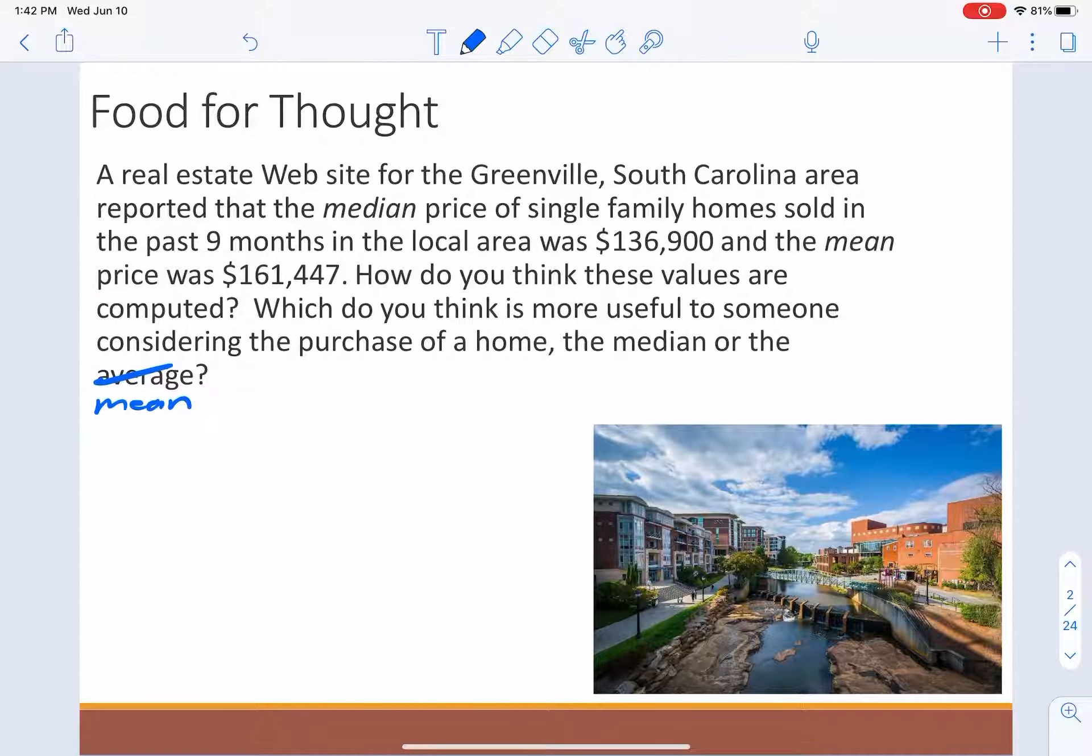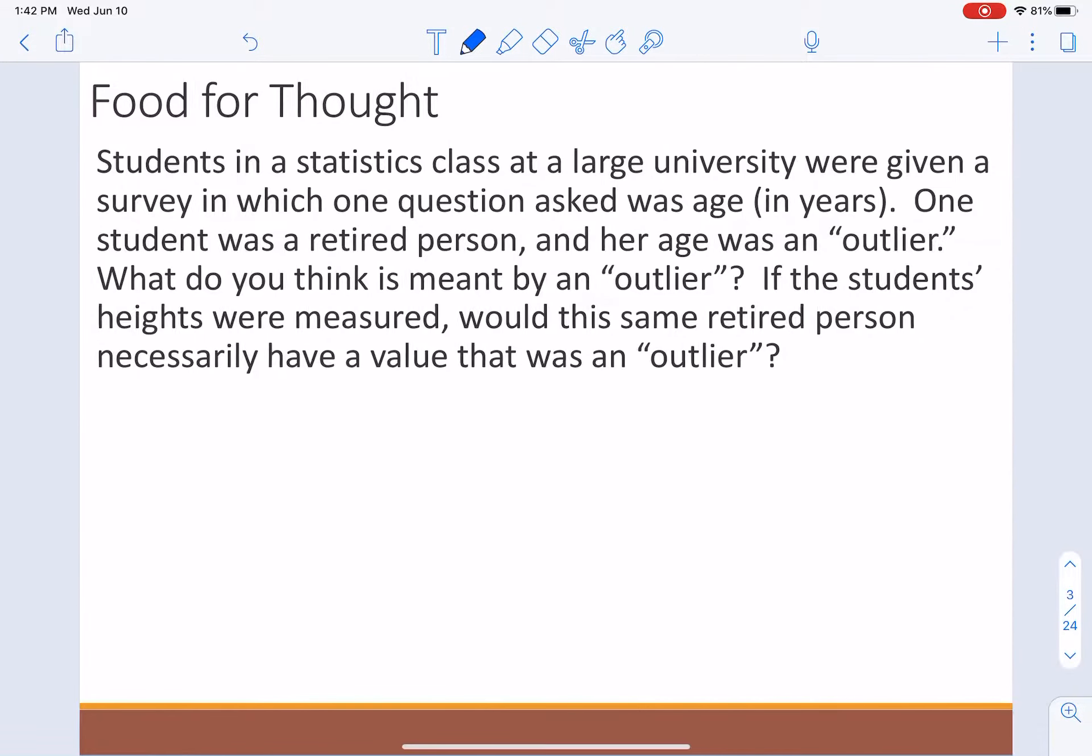Let's move on to another question. Students in a statistics class at the university were given a survey and asked for their age. One student was retired and her age was considered an outlier. What do you think that means? I will let you pause the video again and just think about it for a second.